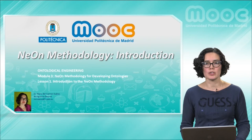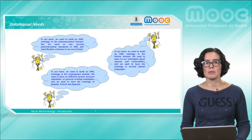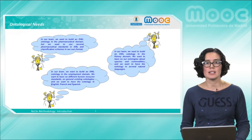Let's suppose different cases in which an ontology should be developed. For example, the situation in which an OWL ontology in the pharmaceutical domain should be developed. In such a development, it is needed to use several pharmaceutical standards in XML and also classification schemes in a particular format. In addition, it could be necessary to have the final ontology in different natural languages such as English and Spanish.